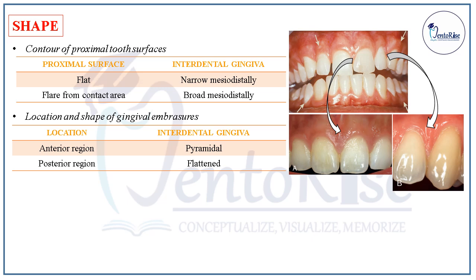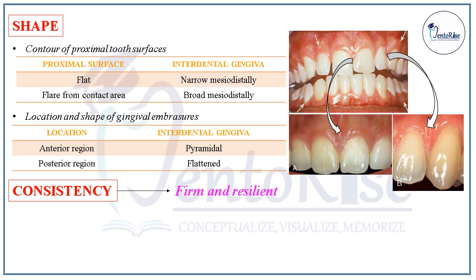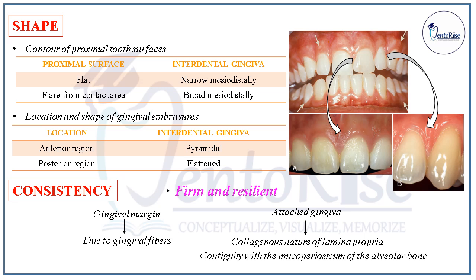The next heading is consistency of normal gingiva. The normal gingiva is firm and resilient in consistency. This is attributed to the gingival fibers in the gingival margin and in the attached gingiva. This firm and resilient nature is because of the collagenous nature of lamina propria of the gingiva and the contiguity of the gingiva with the mucoperiosteum of the alveolar bone.